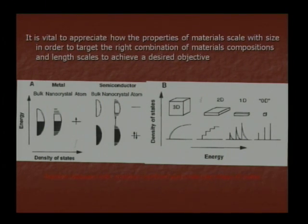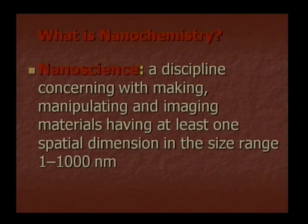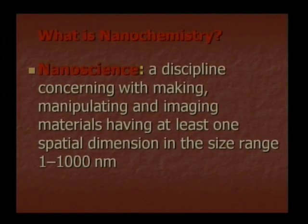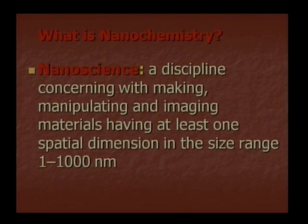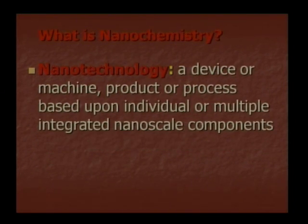At 0D, 1D, 2D and 3D dimensions. Now what is nano chemistry? To become a good nanotechnologist you require knowledge of physics, chemistry and mathematics. Nanoscience is a discipline concerning making, manipulating and imaging materials having at least one dimension in the size range of one to one thousand nanometers. Nanotechnology: a device or machine, product or process based upon individual or multiple integrated nanoscale components.